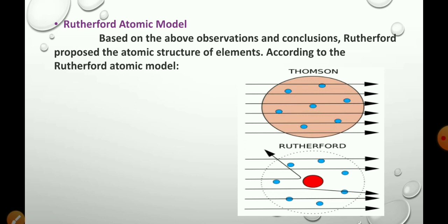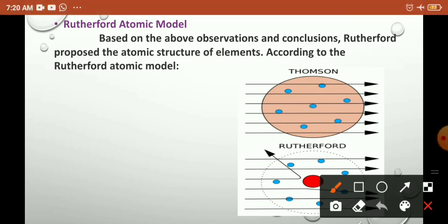So first we start with the Rutherford atomic model. Rutherford atomic model is based on the alpha scattering experiment — the Rutherford scattering experiment. Based on the above observations and conclusions from the Rutherford scattering experiment, Rutherford proposed the atomic structure of elements.